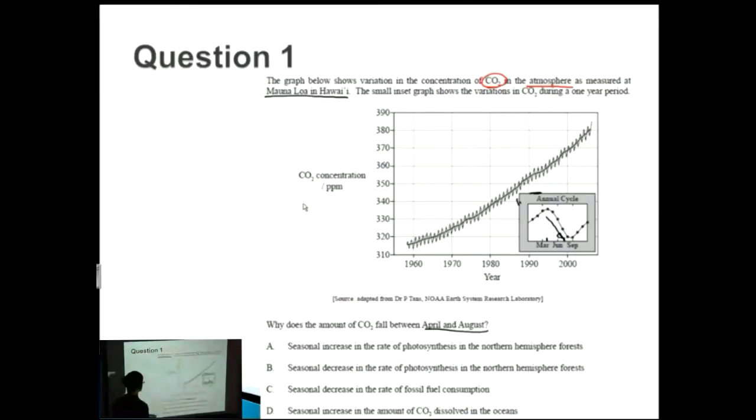Answer A: seasonal increase in the rate of photosynthesis in the northern hemisphere forests. So we're talking about an increase in the rate of photosynthesis. Let's see if that corresponds to a decrease in CO2. If we increase photosynthesis, we have CO2 plus H2O plus light going to C6H12O6 as well as oxygen.